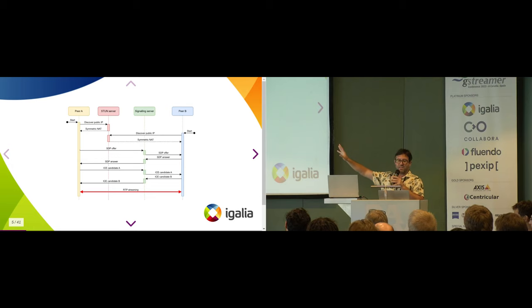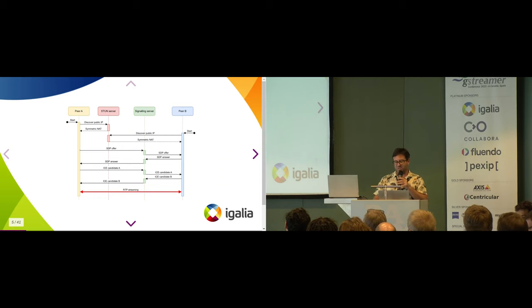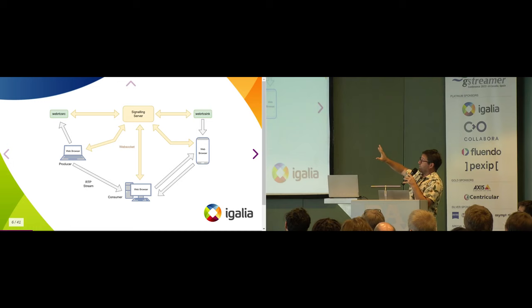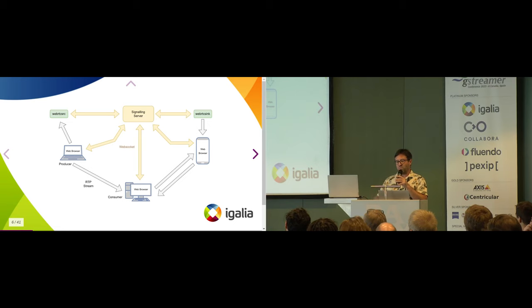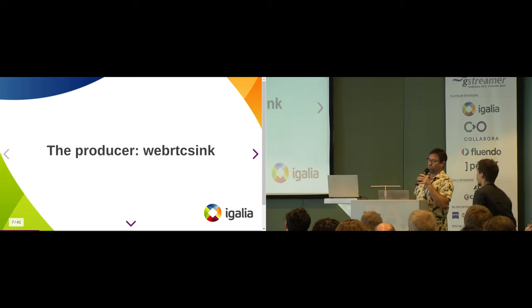What you see here is basically what is done by WebRTC Sync today in GStreamer. To have a full working application, you have a lot of work to do. This is what Matthew is going to explain. Basically, with a high-level API, you have everything in place to communicate from a web browser, from GStreamer, as a consumer or as a producer, without having to do anything more than what you get with WebRTC Bin. I'm going to give the microphone to Matthew, and he'll explain in detail how it is done with the producer WebRTC Sync.